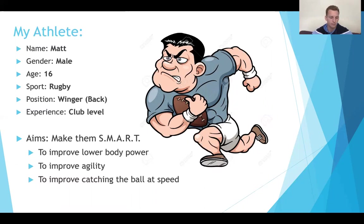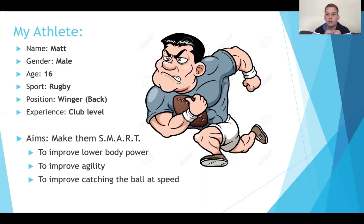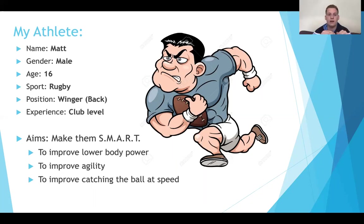Once you've created your athlete, we need to create some SMART targets or aims. Next year for coursework, you'll do a load of fitness tests on your athlete — testing speed, power, agility, strength, balance, coordination, cardiovascular endurance. You'll then compare scores, for example on the Illinois Agility Test, to the normative data for their age group. For 16-year-old males, you can see whether Matt is good, average, or poor. If he's below the norm, that becomes one of his targets — to improve his agility through the training program.